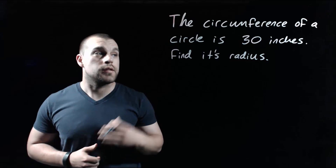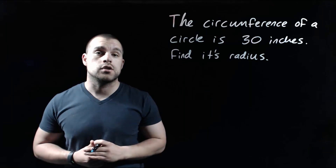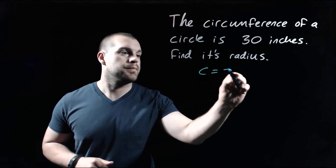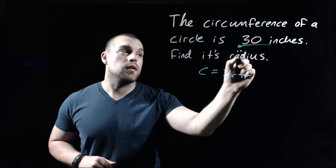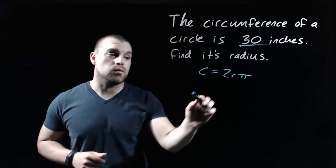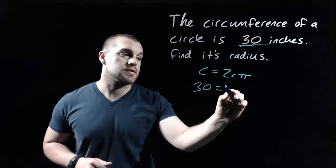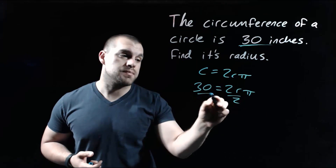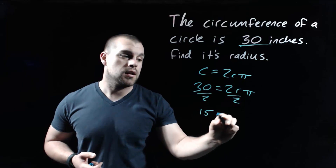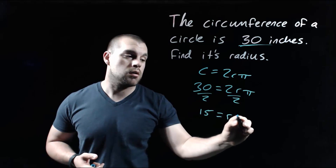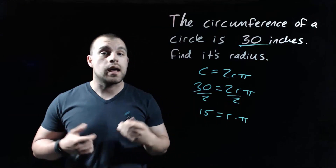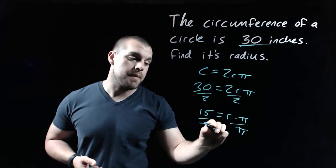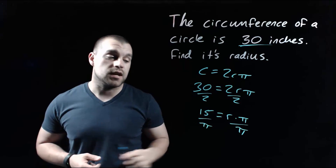In this example we're told that the circumference of our circle is 30 inches, and again we want to find its radius. So we're going to use our formula and plug in the length of the circumference where the C value is — so we plug in 30 on the left-hand side. Now we need to get r all by itself, so we're going to divide both sides by 2. We get 15 equals r times pi, and in order to get r all by itself, we have to divide both sides by pi. When we take 15 divided by pi, we get about 4.77.